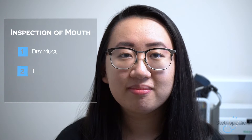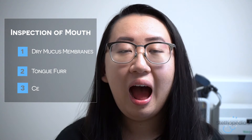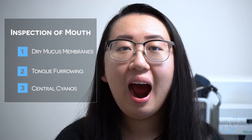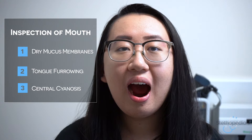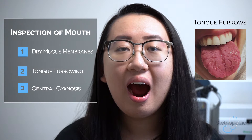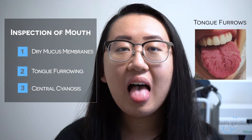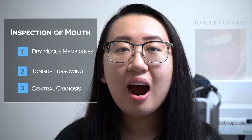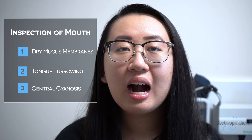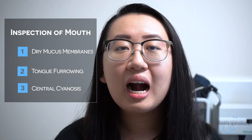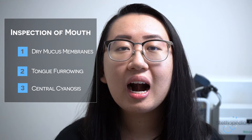I'm going to get you to open up your mouth now and take a look inside at the mucous membranes. I'm looking for any evidence of dry mucous membranes or tongue furrowing, which I don't see at this time. I would also have you lift your tongue to the roof of your mouth — I'm looking for any signs of central cyanosis, which I don't see.